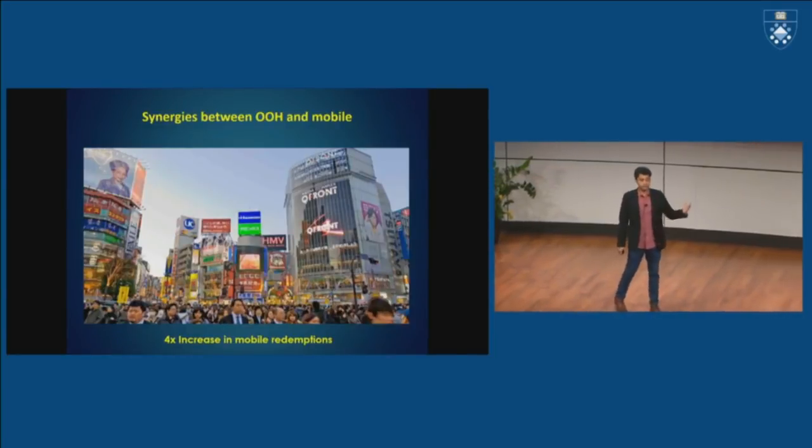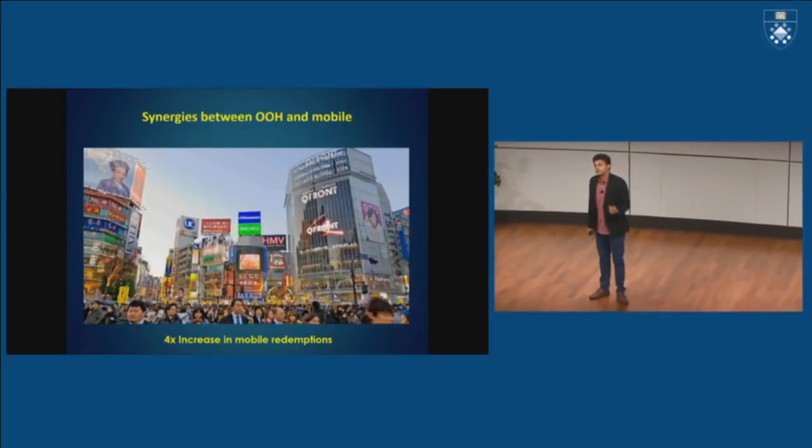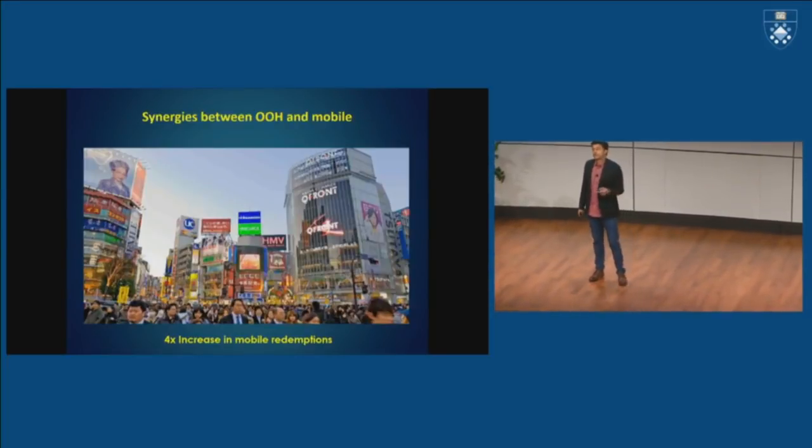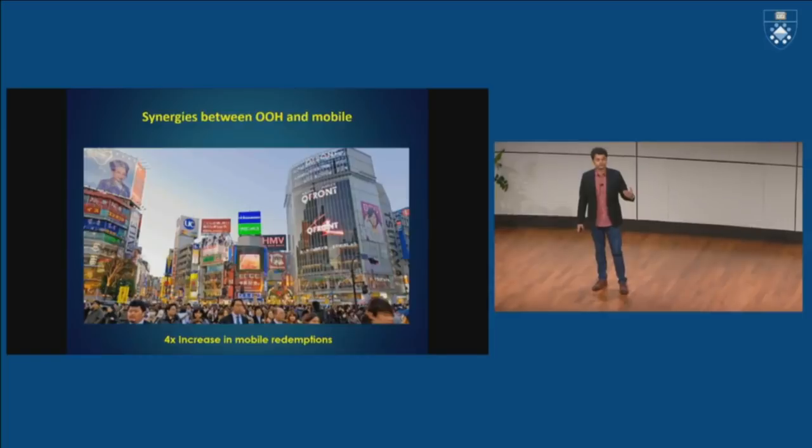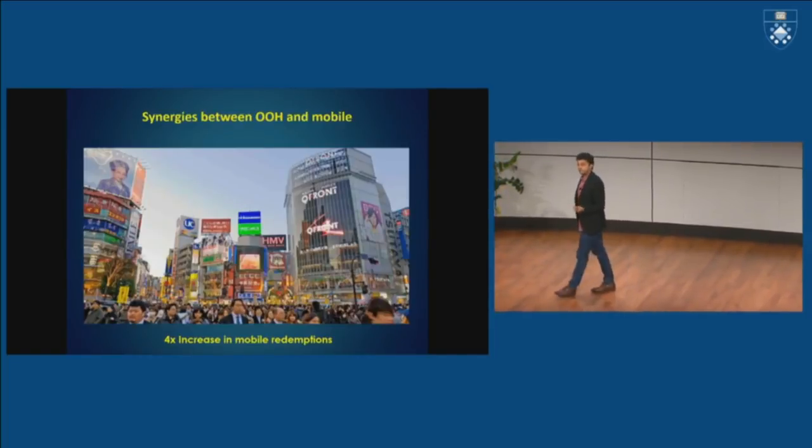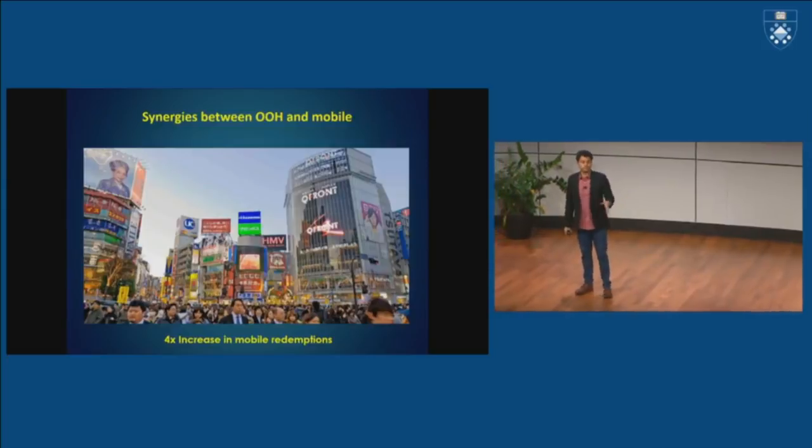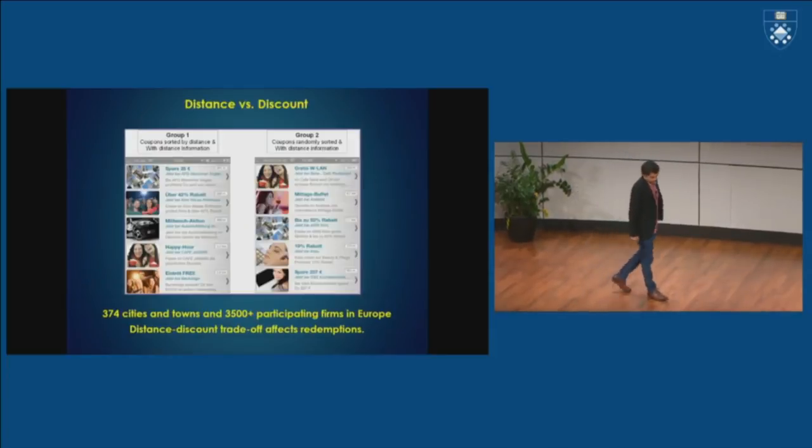49% of them bought whatever product they had to buy within the same day, the other 51% ended up buying within the week or so. And so the average redemption with mobile was about 1.5 to 2%, and in this experiment, that number increased to double digits, so we're getting close to 10% redemption rates.